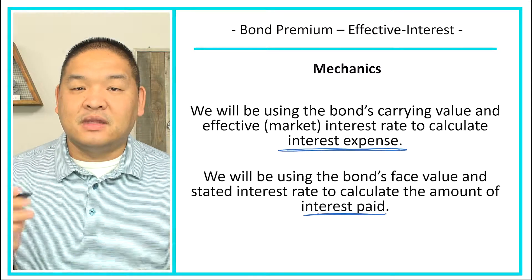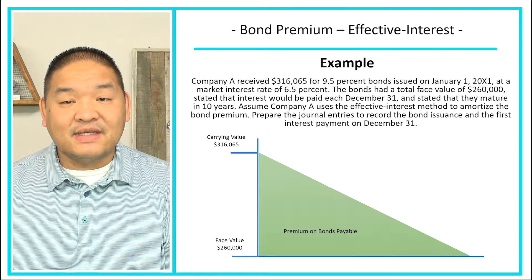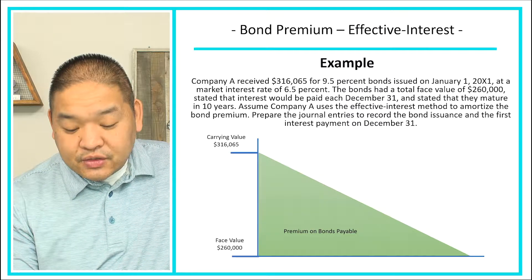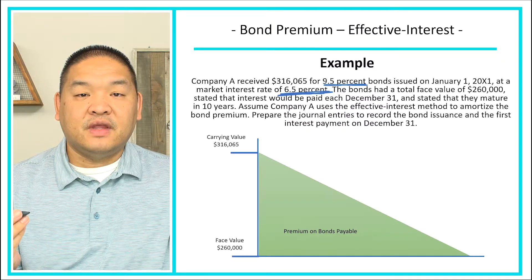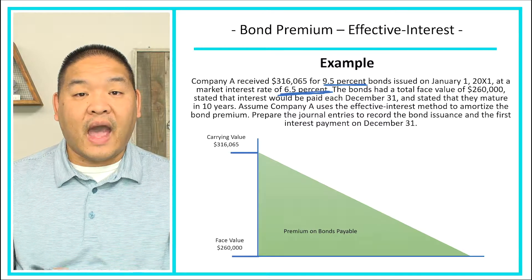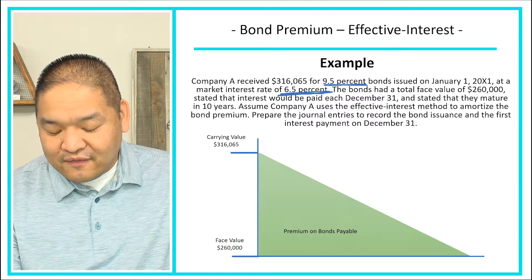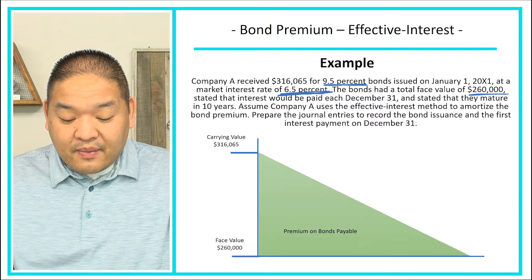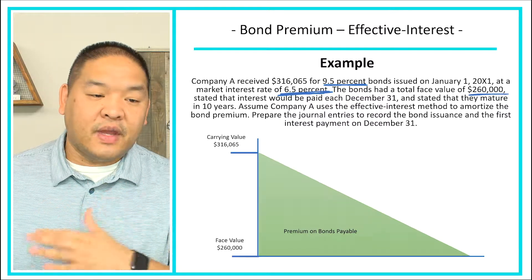Here's our example: Company A received $316,065 for a 9% bond issued on January 1, 20X1 at a market interest rate of 6.5%. The market interest rate is 6.5% but the bond's stated rate is 9%, so effectively an investor is getting 6.5% overall because they paid more than the bond's face value. Interest will be paid each December 31st and the bonds mature in 10 years — so we're paying once a year, not every six months.